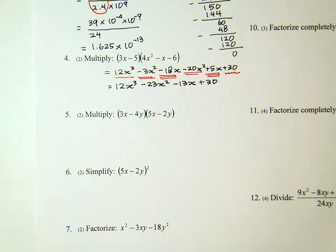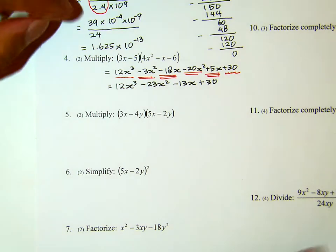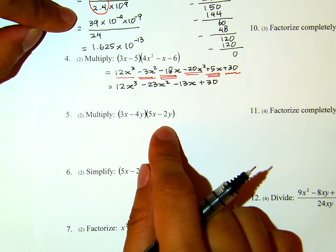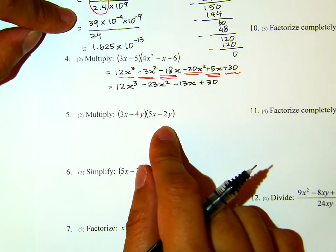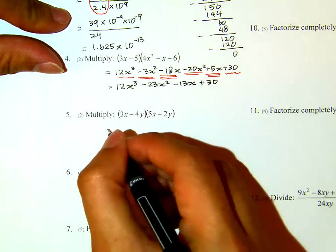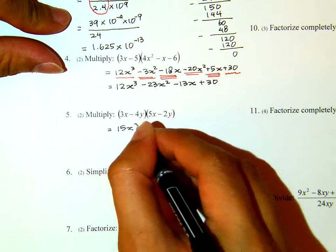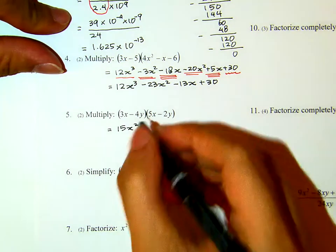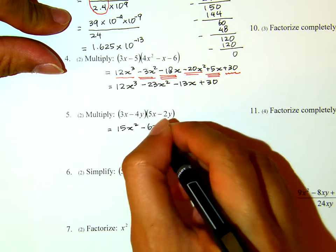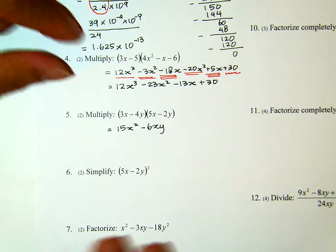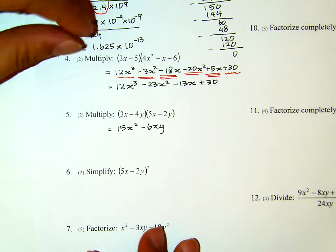Number 5: Multiply these 2 terms by 2 terms. So we expect to have 4 terms later on before we combine like terms. I will first distribute the 3x, and now I will distribute the negative 4y.